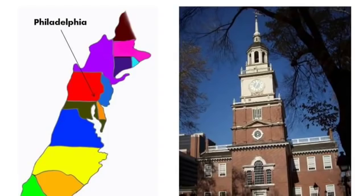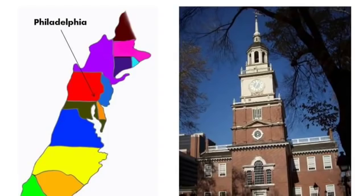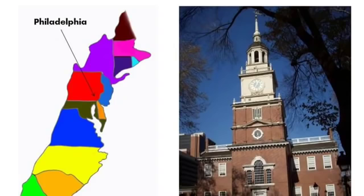The Constitutional Convention was held in Philadelphia. Located in Pennsylvania, Philadelphia was the largest city in the United States at the time, with a population of over 40,000. The delegates met in the same building where the Declaration of Independence was signed eleven years before.